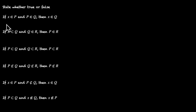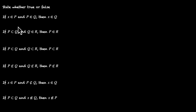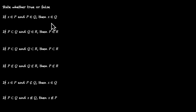If you read the first statement, it says x belongs to P and P belongs to Q, then x belongs to Q. Sounds very logical. If something belongs to P and P belongs to something else, then this x should belong to Q. Seems logical, this should be correct, this should be true.